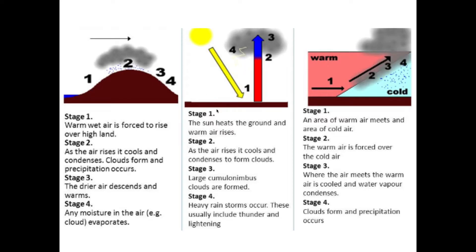The second reason doesn't happen very often in the UK — there's a big bright yellow thing in the sky called the sun. We do occasionally have hot days in the UK, but this is much more common near the equator. The sun heats the earth and hot air rises. Think about hot air balloons — if hot air didn't rise, a hot air balloon ride would be pretty boring! This is called convection, and it's because of heat from the sun. The air rises and it cools.